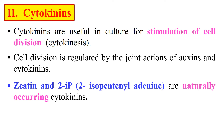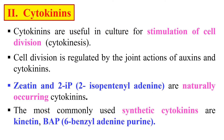Examples of naturally occurring cytokinins include zeatin (Z) and 2-iP (2-isopentenyladenine), while synthetic cytokinins include kinetin and BAP (6-benzylaminopurine).